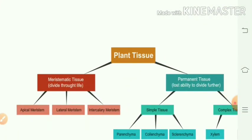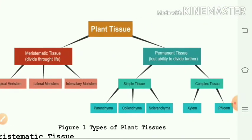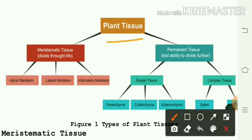We will see the mind map showing how plant tissue is classified. From the concept map, there are mainly two types of plant tissue: meristematic tissue and permanent tissue. Meristematic tissues divide throughout the life of the plant, but permanent tissues lose the ability to divide further.